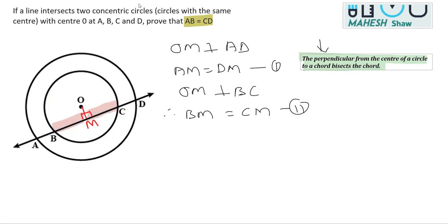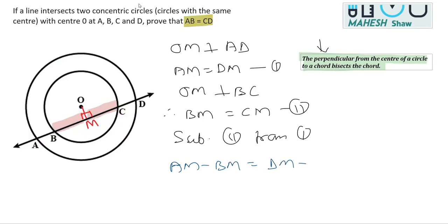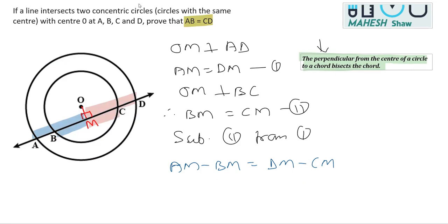Now, subtracting Equation 2 from Equation 1: AM minus BM equals DM minus CM. From the diagram, AM minus BM gives AB, and DM minus CM gives CD. Therefore, AB equals CD, which is what we needed to prove.